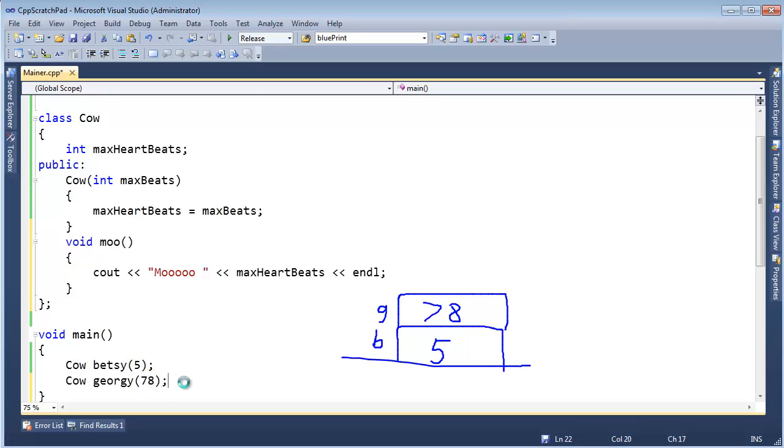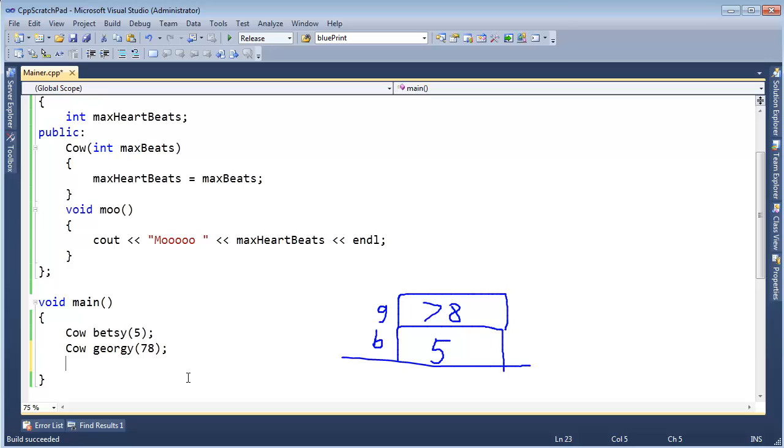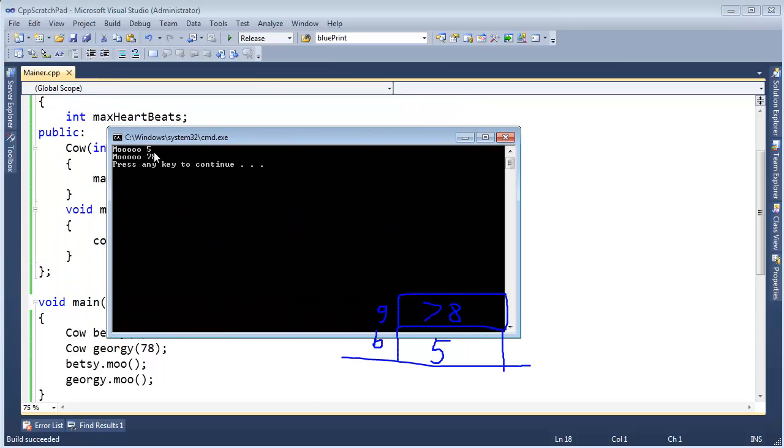All right, and this will be a very simple moo function. I'll say C out, moo with a space, and then let's just report the maximum heartbeats, and we'll put an end line out there. Let's run this. Hopefully, you expect to see a five and a 78. Oh wait, we got to call moo, don't we? All right, let's say Betsy.moo, and Georgie.moo, like so, and control F5. We can see, certainly, there's a five and 78. Very good.